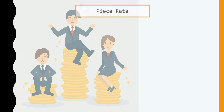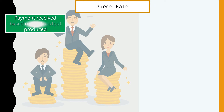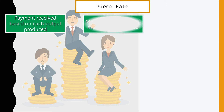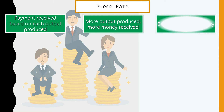First up: the piece rate method. Piece rate is basically payment made for each unit of output produced. Back in the days of factories, and even now, people get paid for the amount of items they produce. This means that when they produce more items, they make more money — which is very motivating as it encourages productivity.